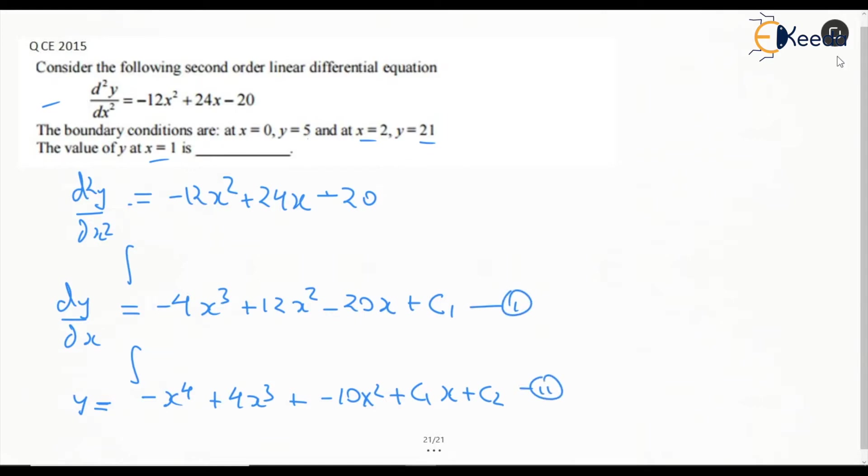Now we have two conditions. It says x=0 at y=5. In equation 2, substituting x=0 and y=5...